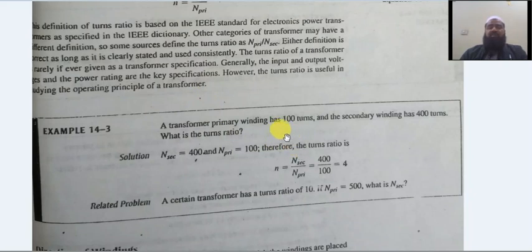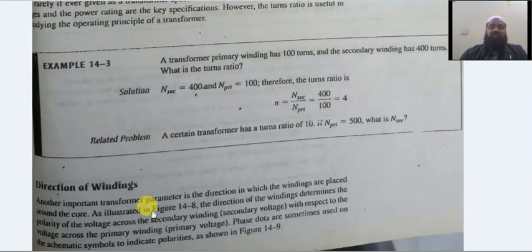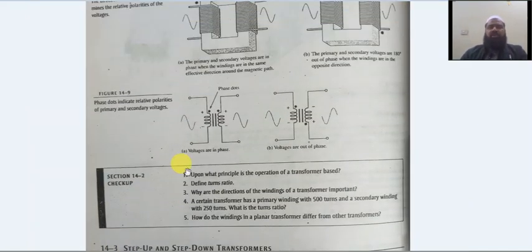For example, if a transformer has a certain number of turns on the primary side and secondary side, the turns ratio equals N secondary divided by N primary. If the secondary has more turns than the primary, the ratio is greater than one.